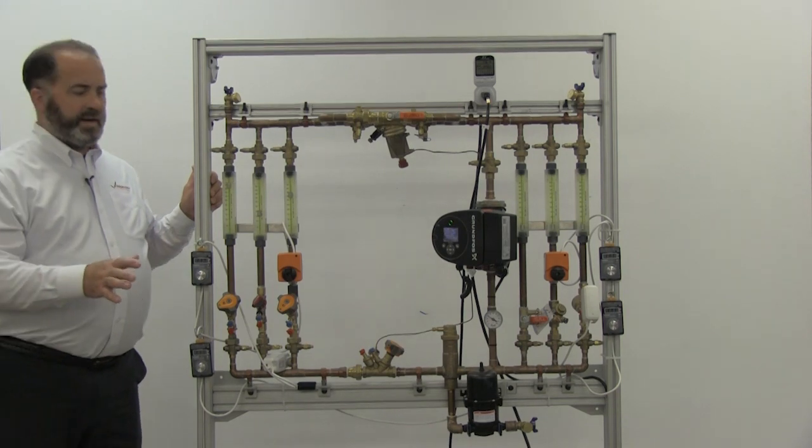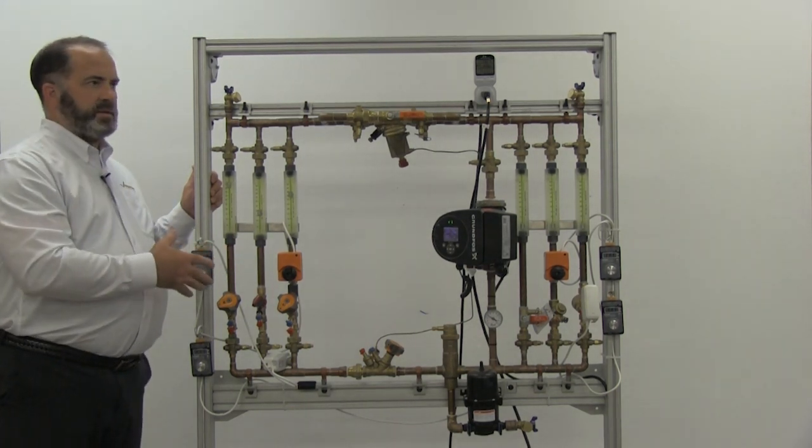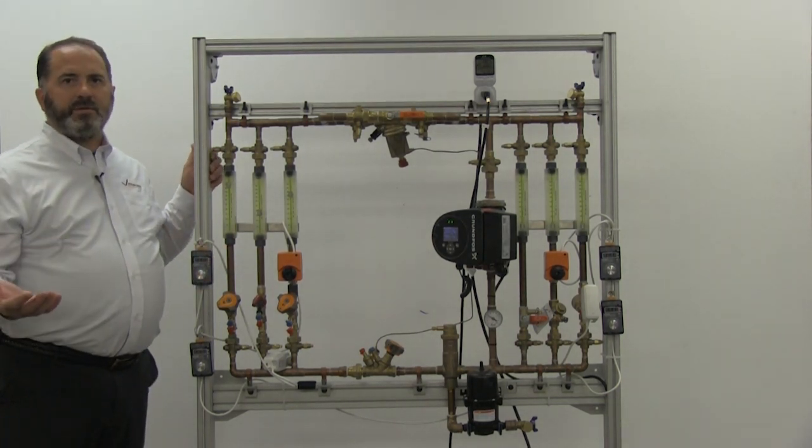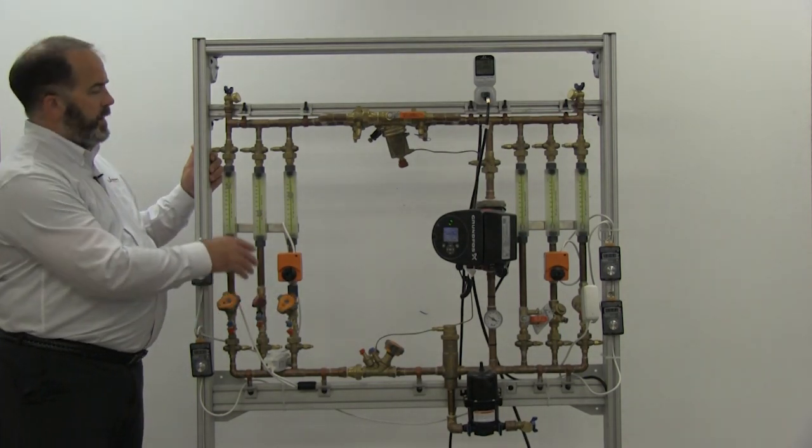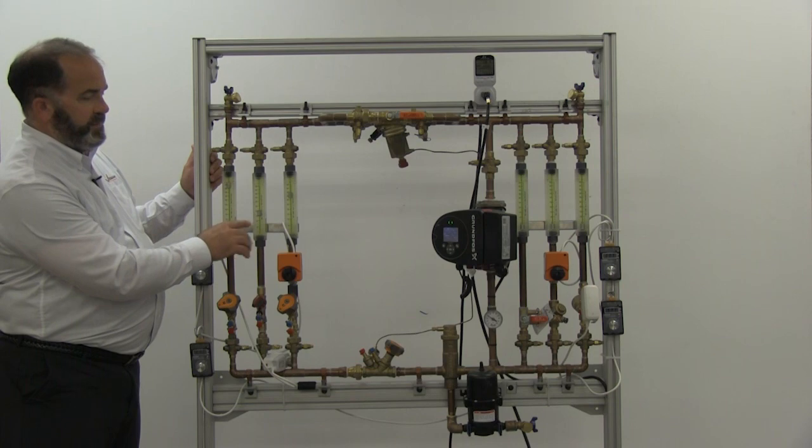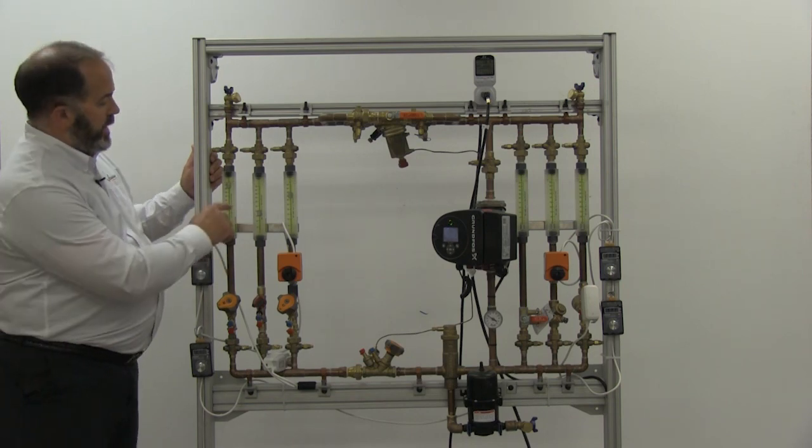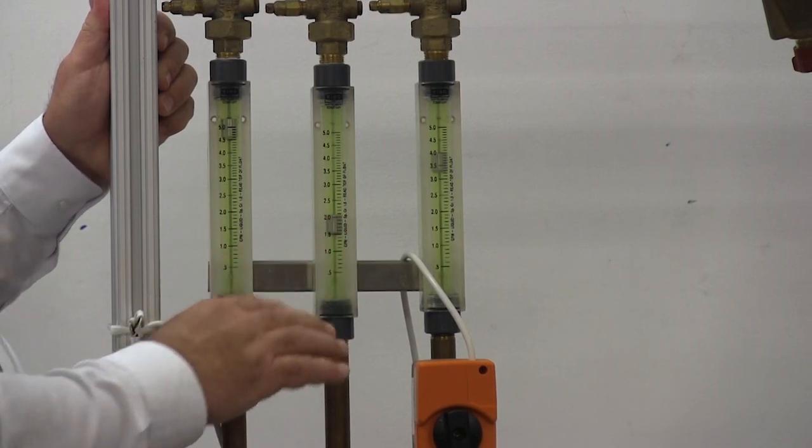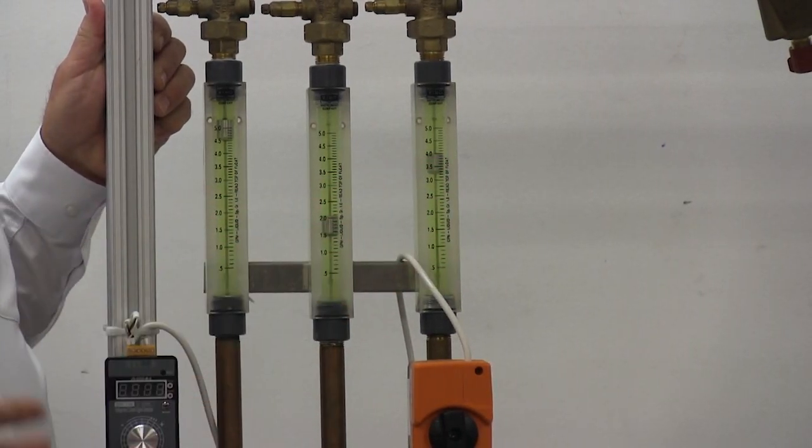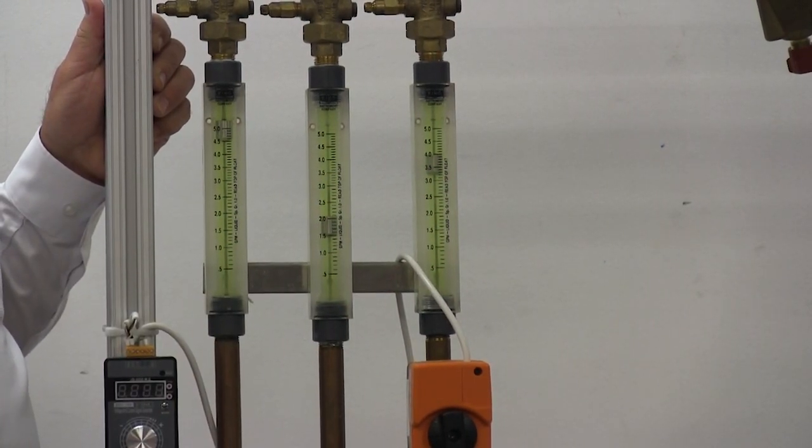Right now, the way my system is set up, I have basically an unbalanced system. This will simulate not having any balancing valves at all. So I have all these open as wide as they can go, and even though I have a design flow of 2 GPM, you can see that I have everything pretty well overflowing. This one is overflowing by about 20 percent, and the rest are overflowing by more than 100 percent.